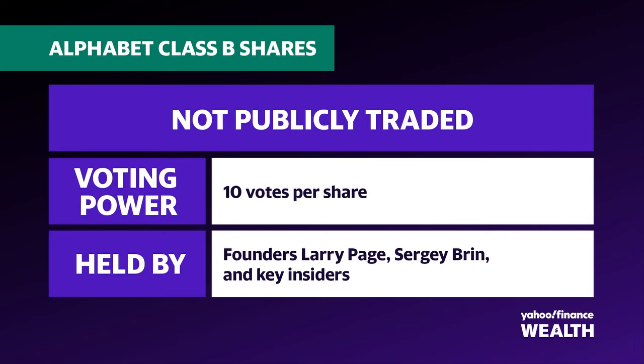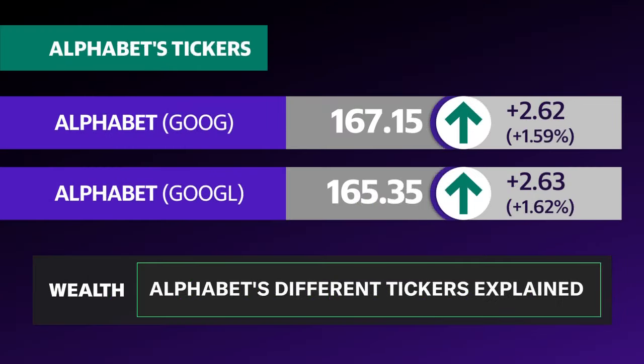Now if you're wondering whether we skipped a letter — yes, there are Class B shares, but they are not publicly traded. The voting power for those is 10 votes per share, and they are held by founders Larry Page and Sergey Brin and some key insiders from when the company first went public. For the shares you can invest in, Goog and Googl usually trade at very similar prices, but Class A shares usually trade a little bit higher, thanks to the premium that comes with those voting rights.